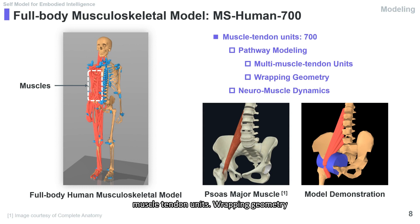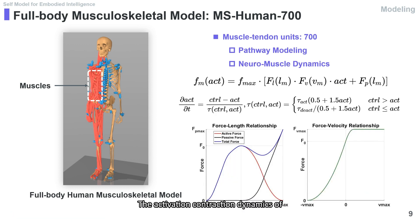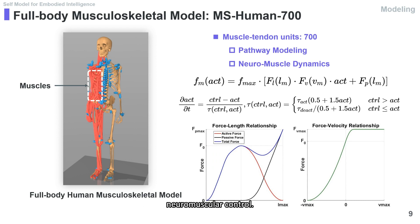Wrapping geometry surfaces are added to the pathways to model physical constraints imposed by bones and soft tissue when needed. The activation contraction dynamics of muscles exhibit nonlinearity and temporal delay, thereby posing challenges to neuromuscular control.